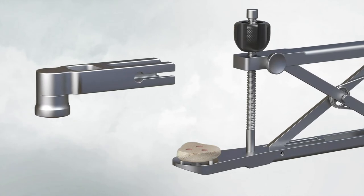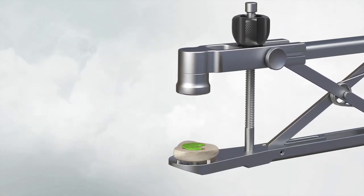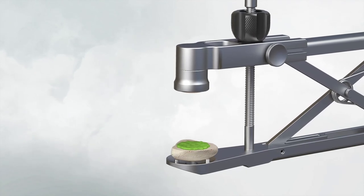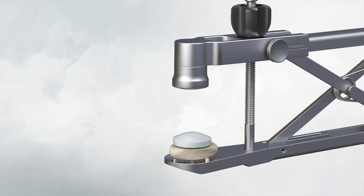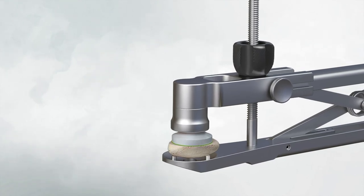Assemble the patellar cement clamp to the patellar reamer guide. Apply bone cement to the reamed patella. Place the patellar implant onto the prepared patella. Clamp the patellar implant into the bone and remove the extruded cement.